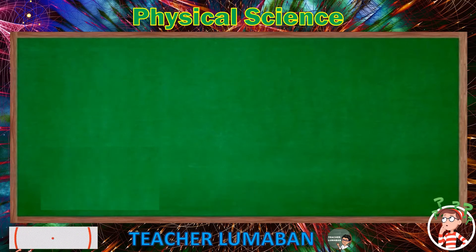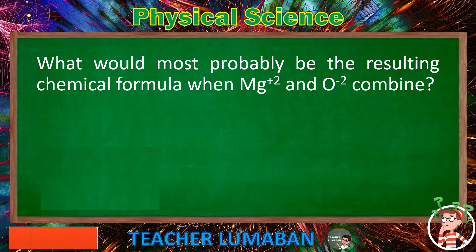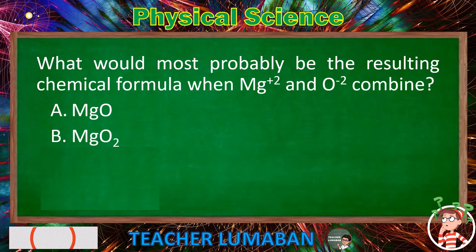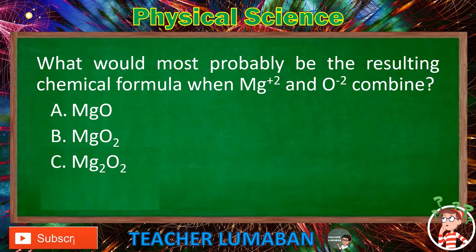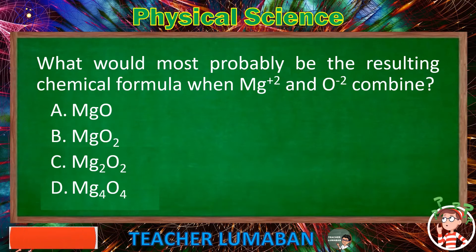What would most probably be the resulting chemical formula when Mg²⁺ and O²⁻ combine? Letter A: MgO. Letter B: MgO₂. Letter C: Mg₂O₂. Letter D: Mg₄O₄. Choose the suitable answer based on the given choices in 5 seconds.